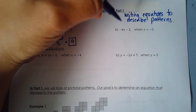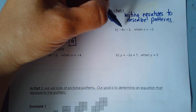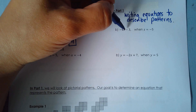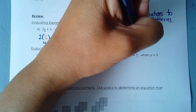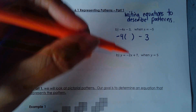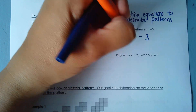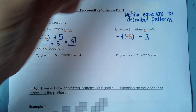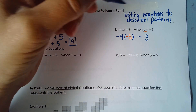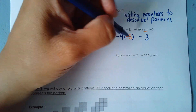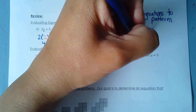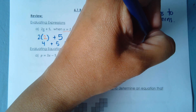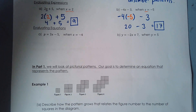Question b is the same thing. We have an expression and I want to evaluate it when x equals negative 5. So I rewrite the equation, putting in a bracket where I have the variable, and plug in negative 5. Then I go to calculate it: negative 4 times negative 5 is 20, minus 3, which gives me 17. We'll be using this in the lesson today — that's why I'm doing a review.